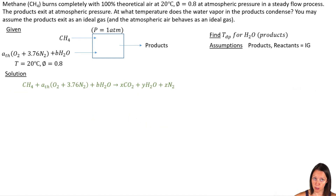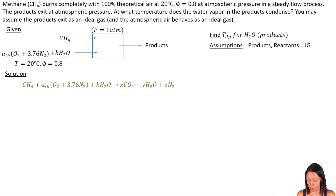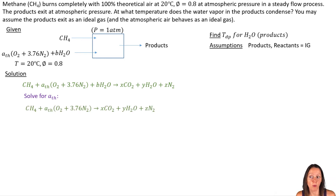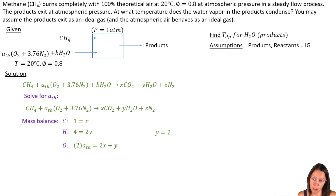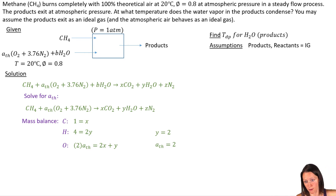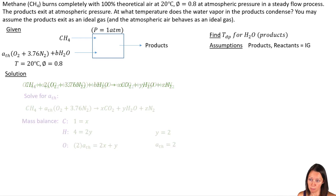I just need to solve for the coefficients. First, I need to solve for the theoretical amount of air, A_TH — the minimum amount of dry air required for complete combustion of methane. To solve for A_TH, I'll eliminate the B_H2O water vapor term. Doing the mass balance: carbon gives X = 1; hydrogen gives 4 = 2Y, so Y = 2; oxygen gives 2·A_TH = 2X + Y, so plugging in X and Y, I get A_TH = 2. I don't need to solve for Z here since all I'm after is the theoretical air. I take A_TH = 2 and plug it into the top equation.